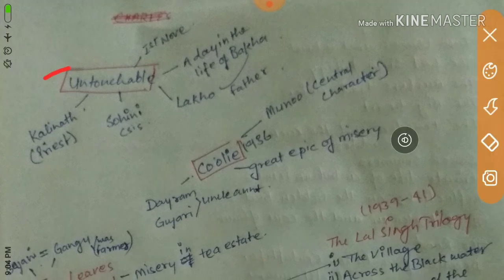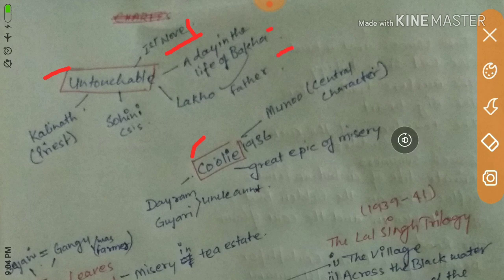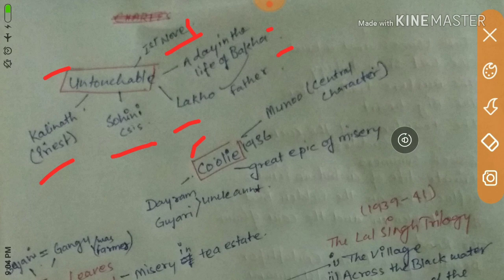Untouchable is the first novel by Mulk Raj Anand. It depicts a single day in the life of Bakha. Bakha is the central character. His father's name is Lakha, Sohni is his sister, and Kalinath is the priest who shows bad gestures toward Sohni.